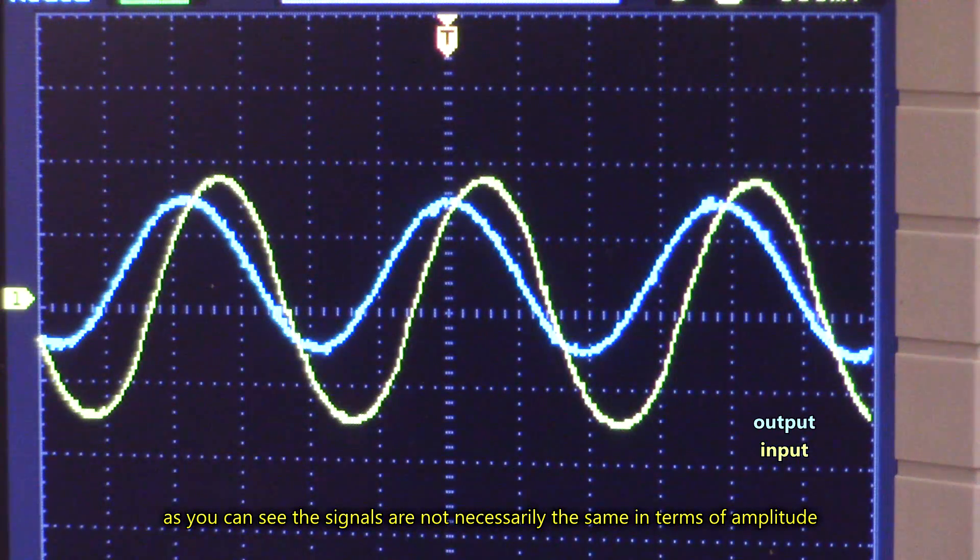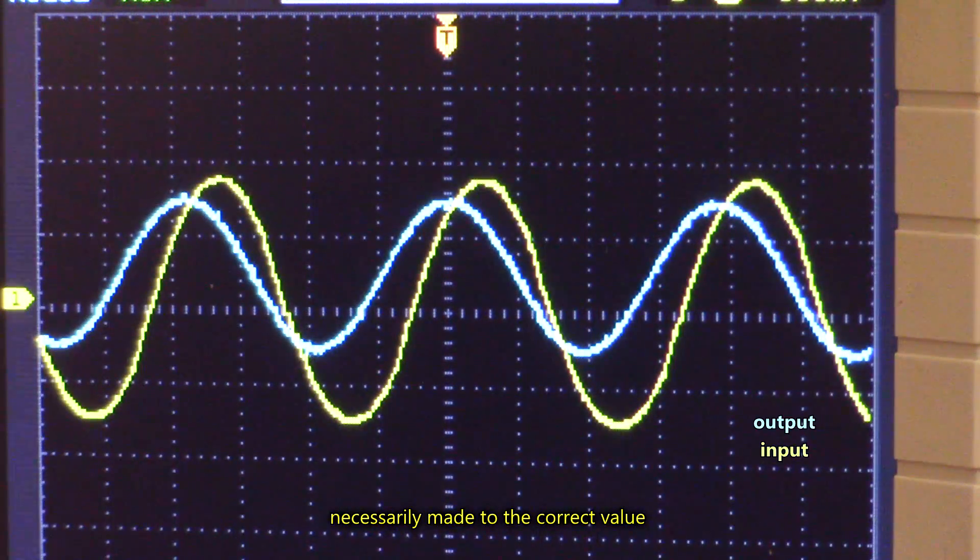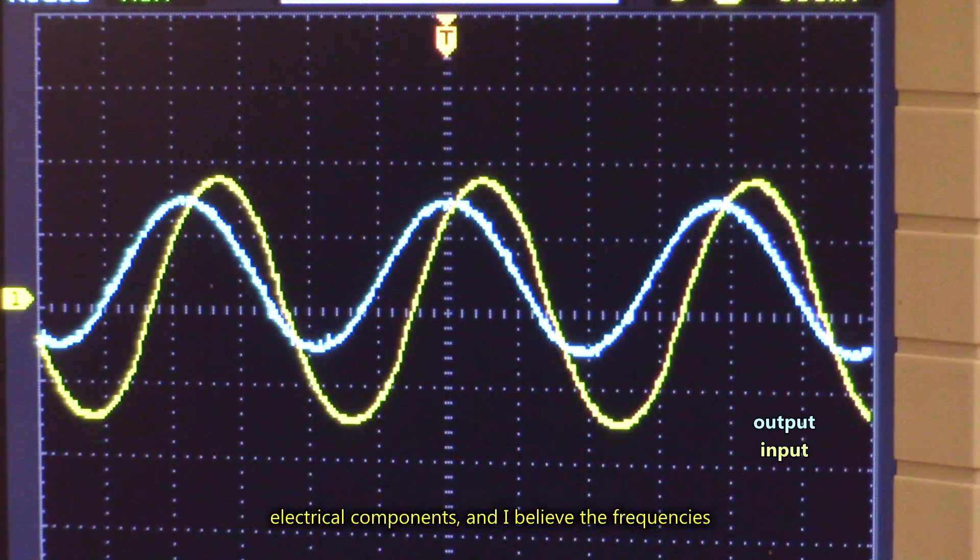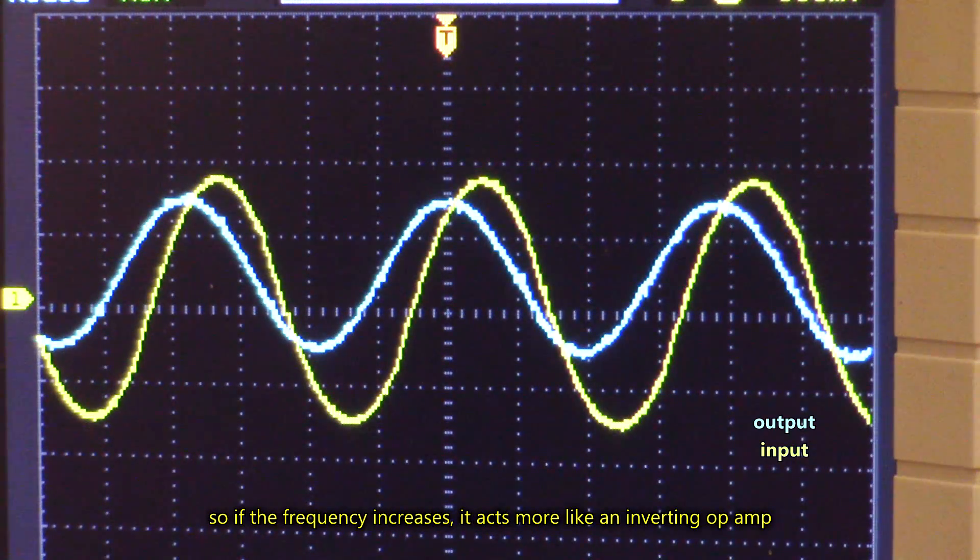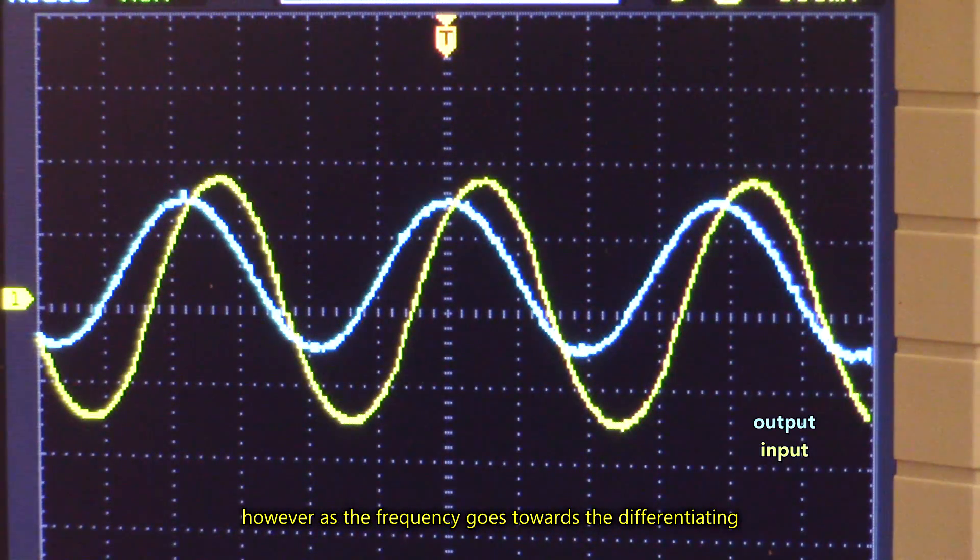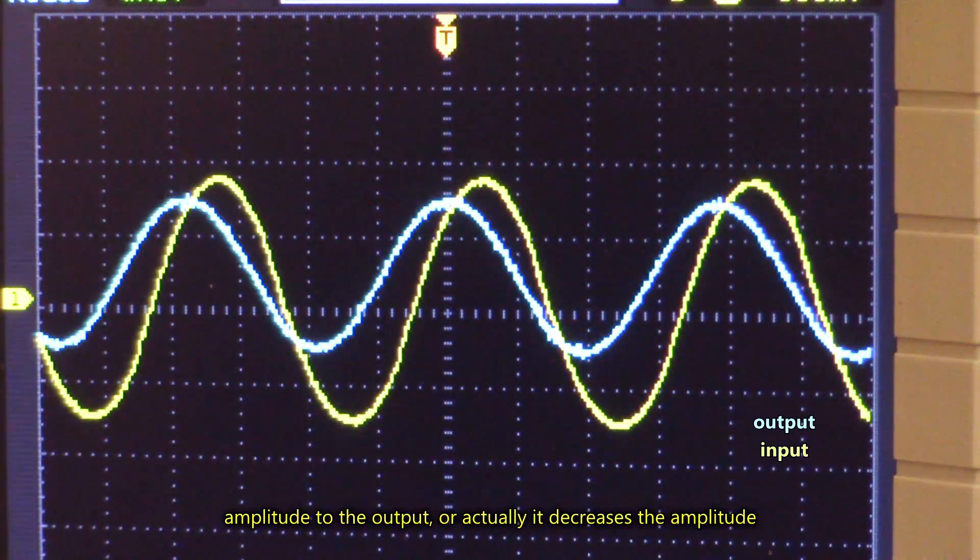As you can see, the signals are not necessarily the same in terms of amplitude. That comes down to the actual capacitor values and resistor values, because they're not necessarily made to the correct value, meaning there's some sort of tolerance when it comes to those electrical components. And I believe the frequency is also dependent on the gain. So if the frequency increases, it acts more like an inverting op-amp. However, as the frequency goes towards the differentiating range of the circuit, it decreases the amplitude to the output.